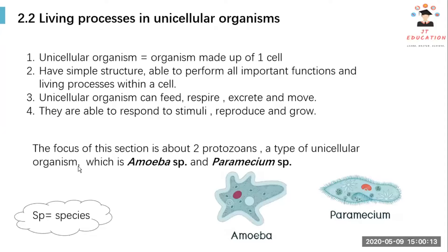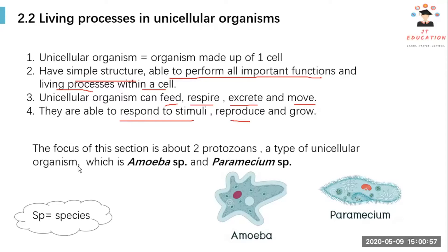After we have learned the animal cells and plant cells, we come to section 2.2: the living processes of unicellular organisms. Unicellular organisms are organisms made up of only one cell. They have a very simple structure, able to perform all important life functions within a single cell — like feeding, respiration (oxygen in, carbon dioxide out), excretion (removal of waste products), movement, responding to stimuli, reproduction, and growth.